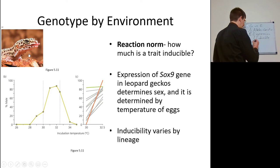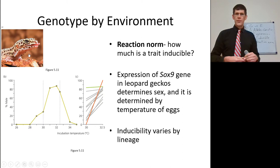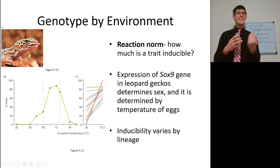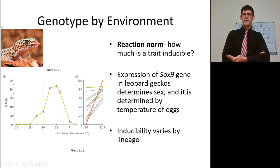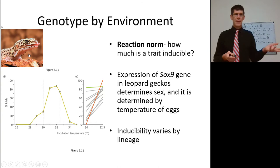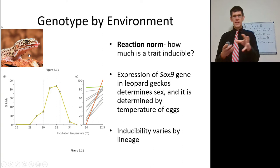We also have something called the reaction norm — how much can a trait be expressed? We all start the summer about the same pasty color after being indoors. How much we get tan depends on our genes. Some northern European descendants don't get very tan; they get red. Some with more Native American ancestry get very tan. How tan you can get is your reaction norm — how inducible a trait is.